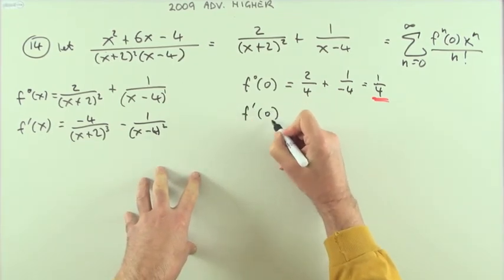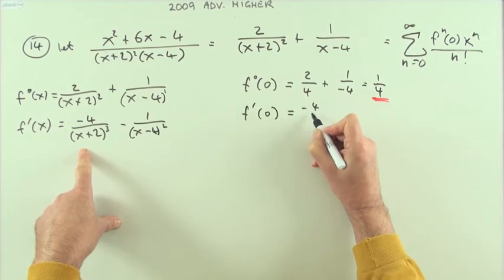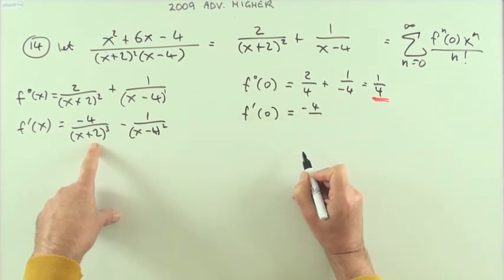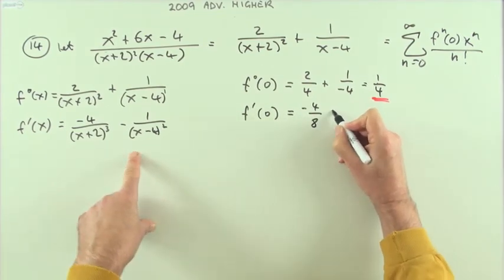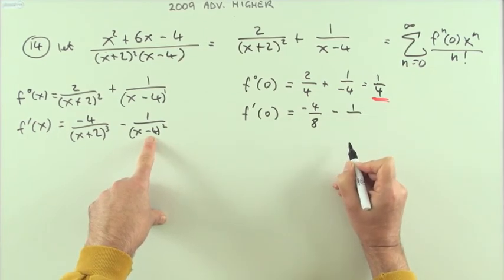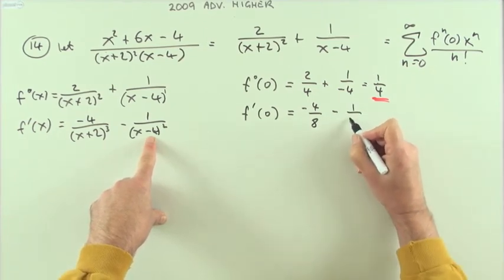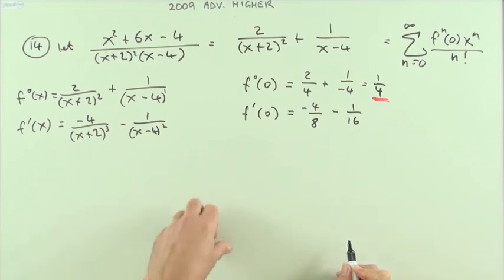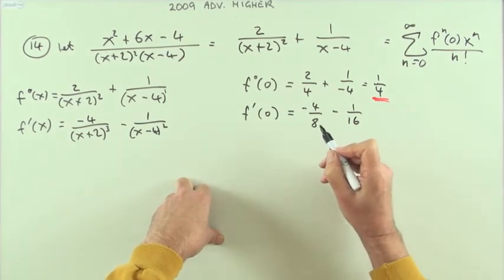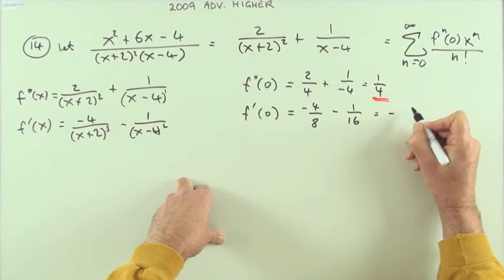Same here: multiply by the power so I'll be multiplied by negative 1, take one off the power so I'll drop down to 2. Then what's the value of the derivative at zero? Well, I've got -4/(2³) = -4/8, minus 1/(−4)² = -1/16. So I've got -4/8, that's -8, that's -9/16.